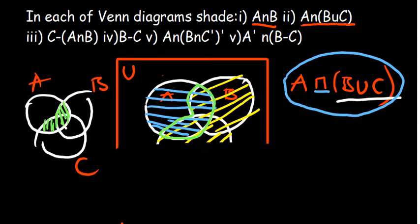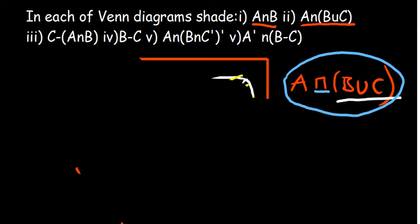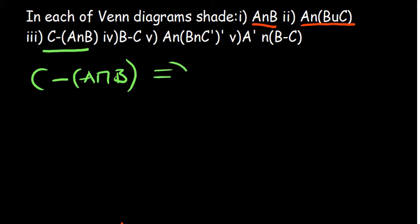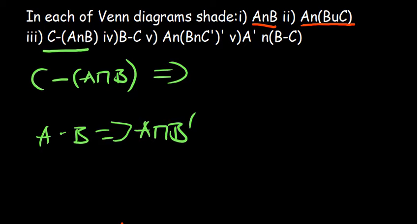Let's move on to the third one. If you look at the third part, it is C minus A intersection B. We need to understand that this is the same as C intersection with the complement of A intersection B. Remember, if you have A minus B, this is equivalent to A intersection B complement, because you're trying to talk about the region that is part of A and not part of B. So C minus A intersection B is basically C intersection with the complement of A intersection B.